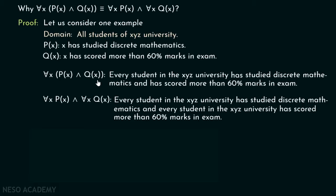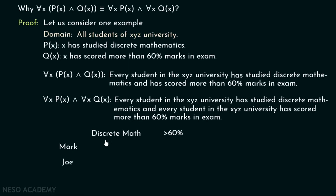To prove equivalence, we first prove the forward implication: for all x P(x) ∧ Q(x) implies for all x P(x) and for all x Q(x). Then we prove the backward implication: for all x P(x) and for all x Q(x) implies for all x P(x) ∧ Q(x). Suppose XYZ university has only two students, Mark and Joe.